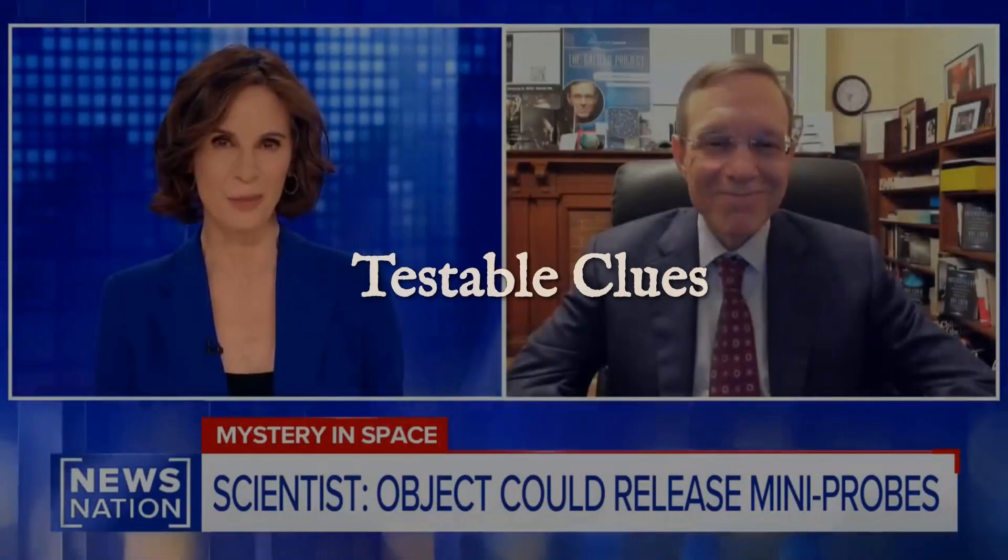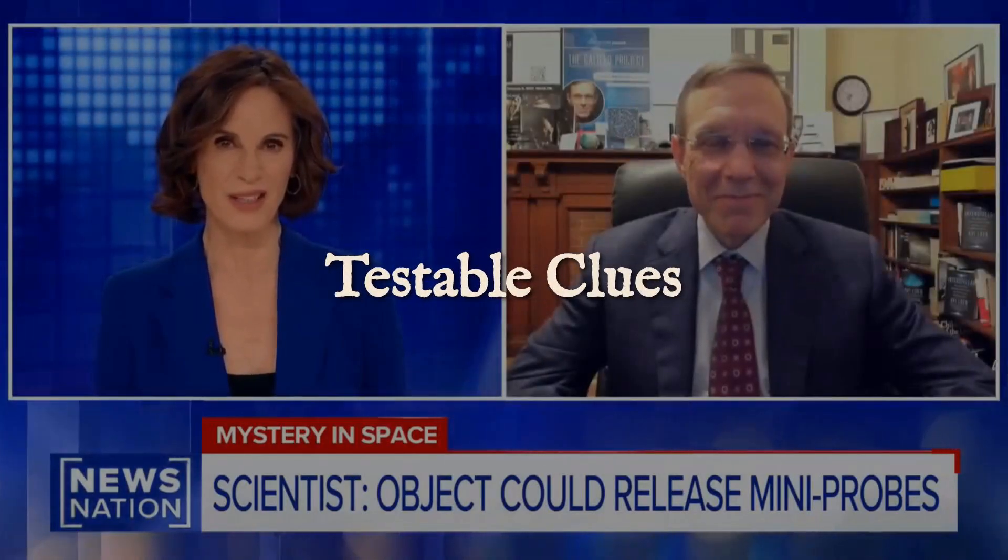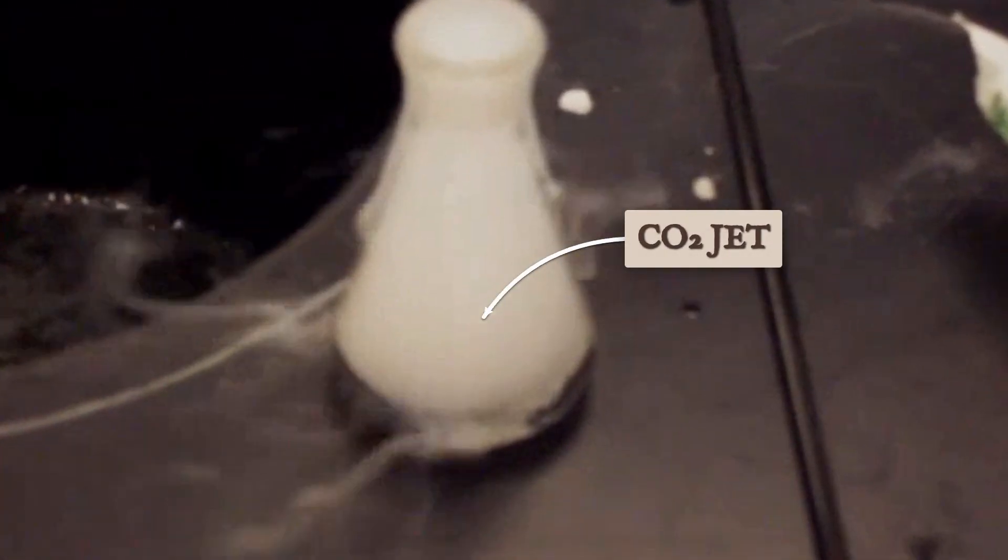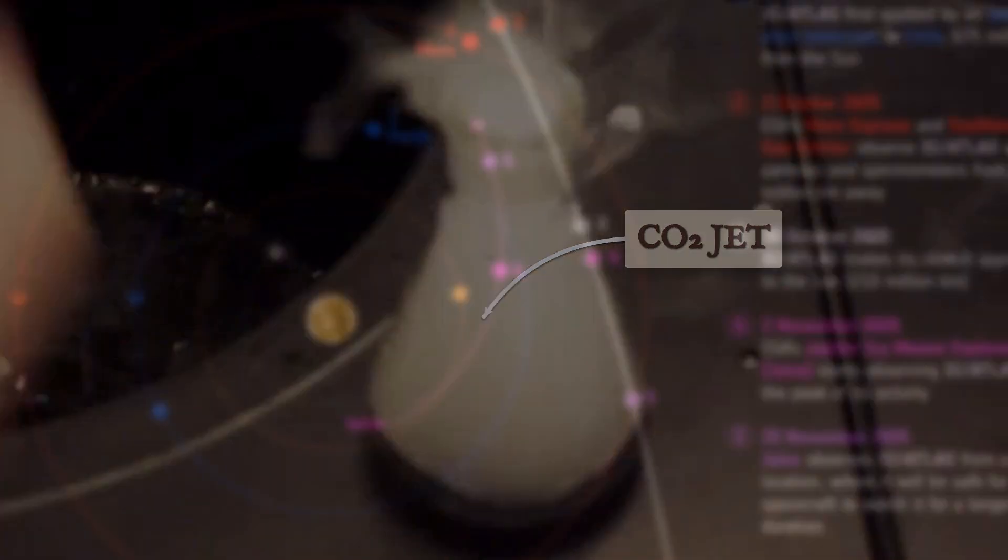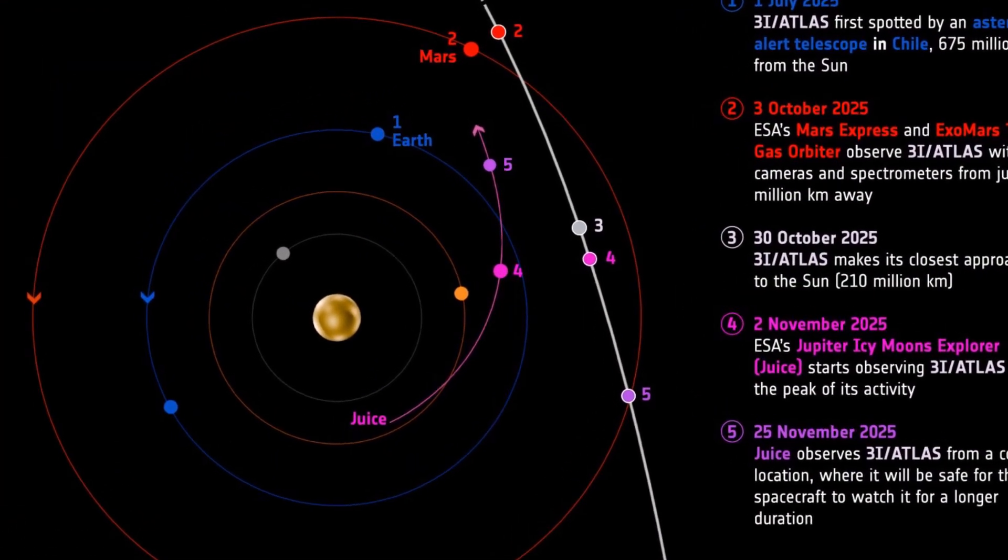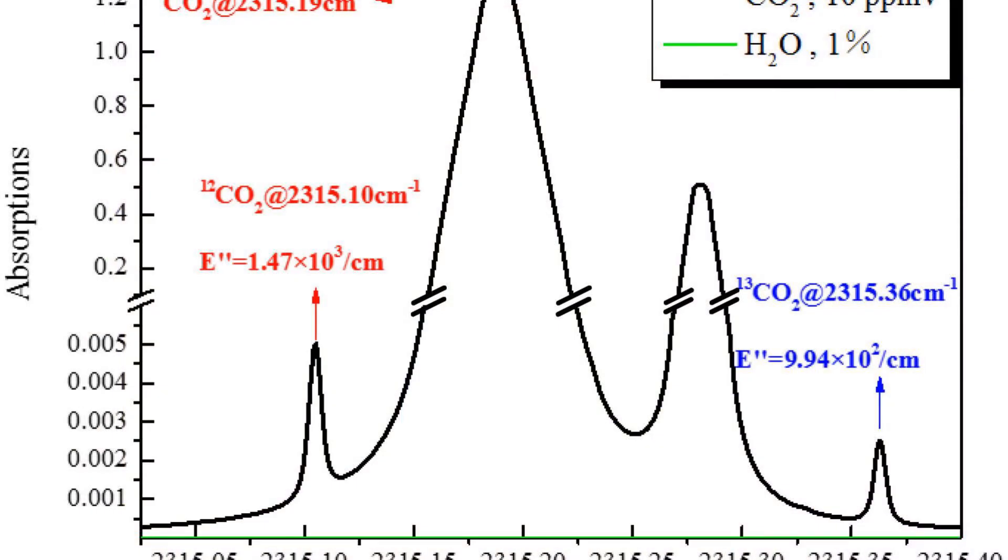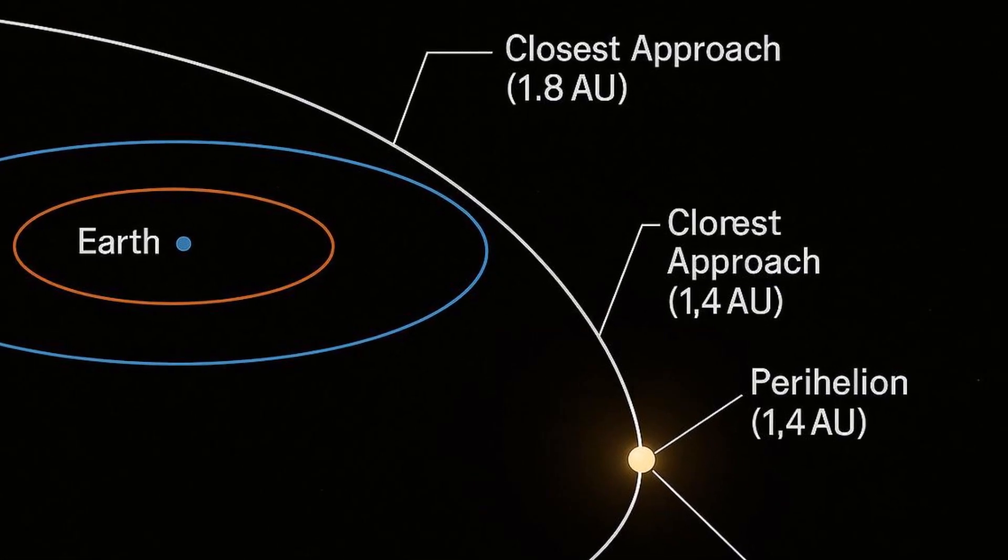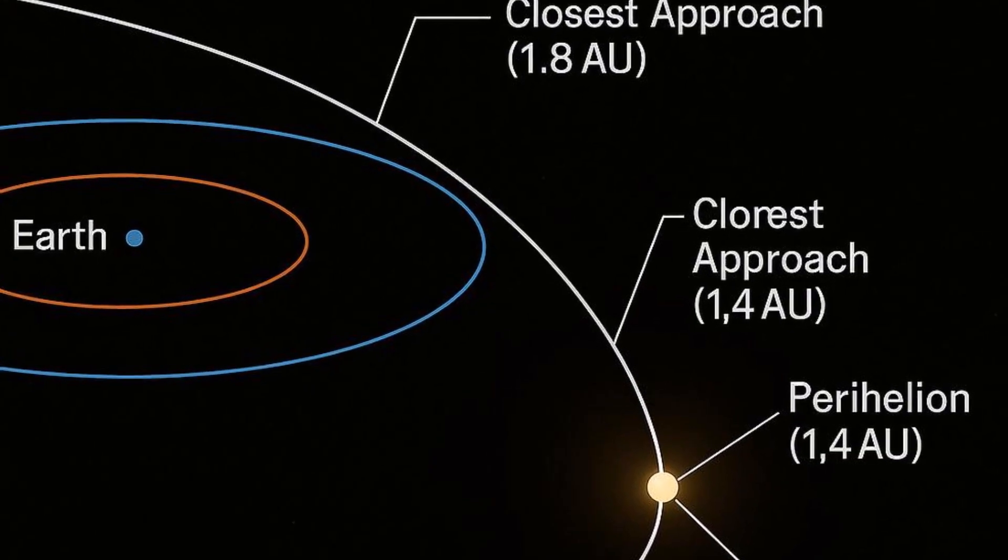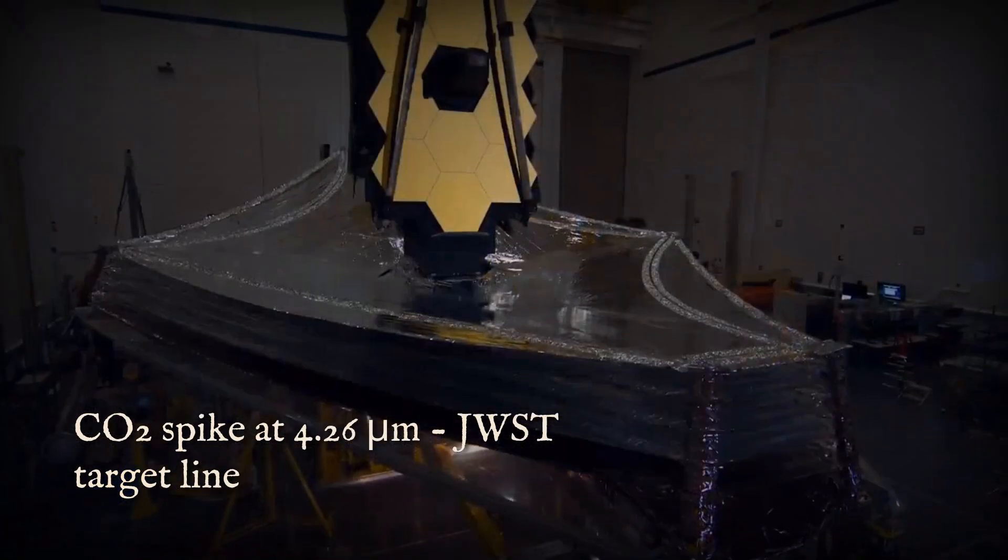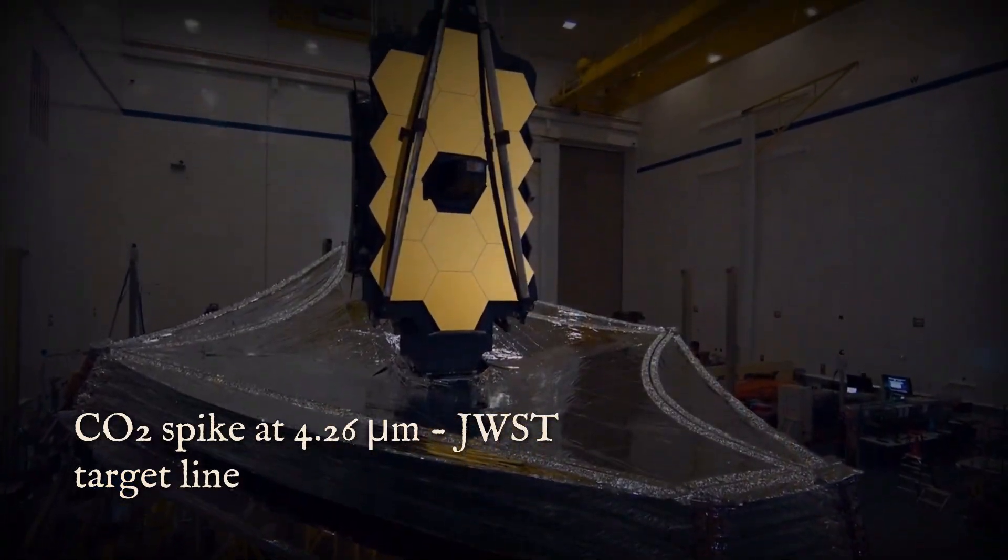Avi Loeb's model doesn't just offer a story, it lays out a checklist of evidence, each item tied to the physics of carbon dioxide-driven grain ejection. The first signature is a powerful spike in the 4.26 micron infrared band. If carbon dioxide is the main volatile, this spectral line should stand out in post-perihelion observations, bright enough for the James Webb Space Telescope or ground-based infrared telescopes to catch.